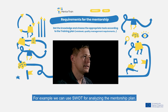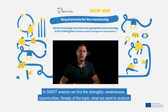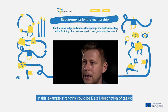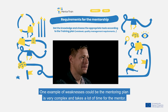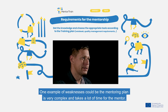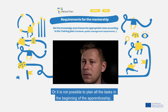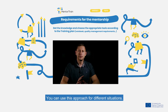For example, we can use SWOT for analyzing the mentorship plan. In a SWOT analysis we find the strengths, weaknesses, opportunities, and threats of the topic we want to analyze. In this example, strengths could be a detailed description of tasks. One example of a weakness could be that the mentoring plan is very complex and takes a lot of time for the mentor, or that it's not possible to plan all the tasks at the beginning of the apprenticeship. You can use this approach for different situations.